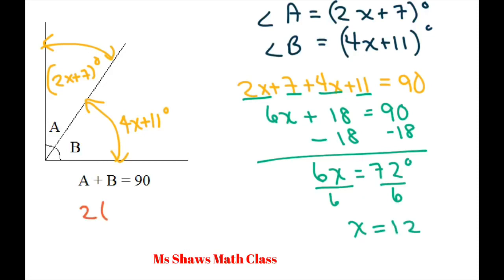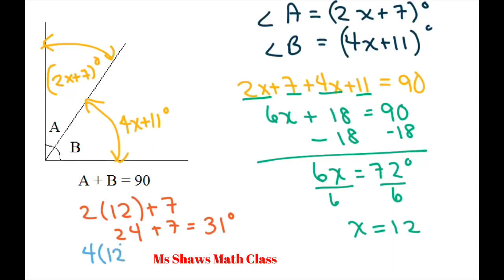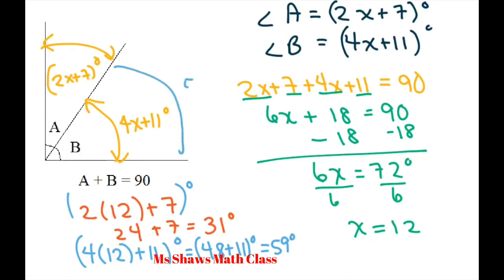Plugging back in: 2 times 12 plus 7 — that's 24 plus 7 — equals 31 degrees. The second angle: 4 times 12 plus 11 — that's 48 plus 11 degrees — which equals 59 degrees. So this angle is 59 degrees and this one is 31 degrees. Add them up: 31 plus 59 equals 90 degrees.